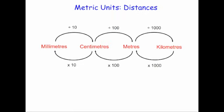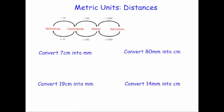Let's have a look at some typical questions. The first question: convert 7 centimetres into millimetres. To go from centimetres to millimetres you multiply by 10, so 7 centimetres times 10 is equal to 70 millimetres.